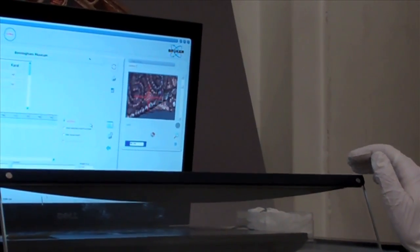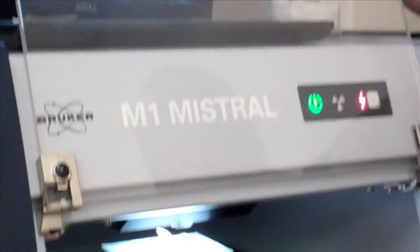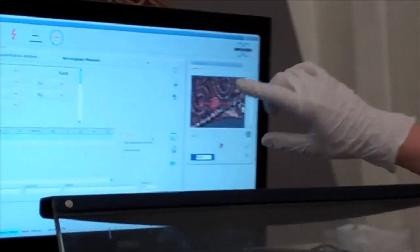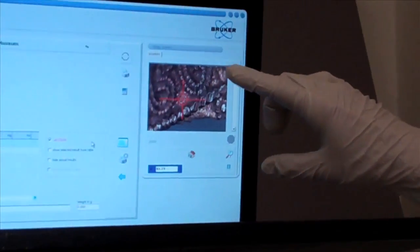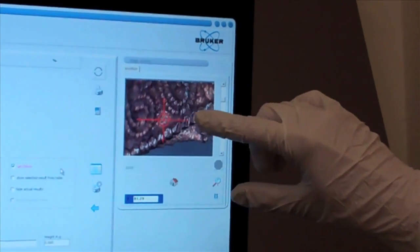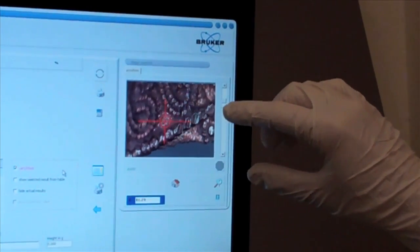So here what I've done is I have placed the object in the machine. And on the screen here you can see the object, the area that we want to measure is in focus, and we have the cross hairs indicating where we're going to be taking our measurement.